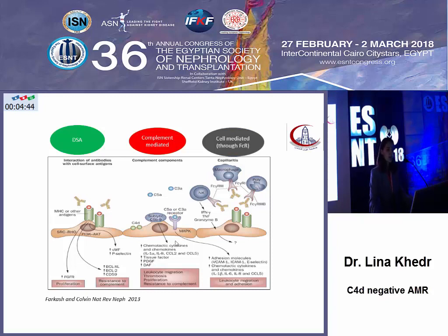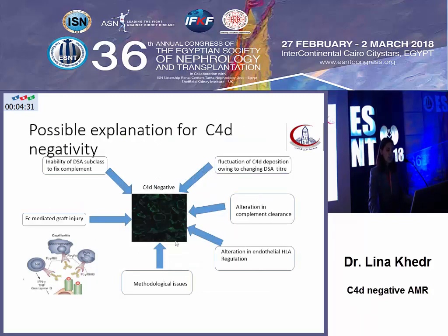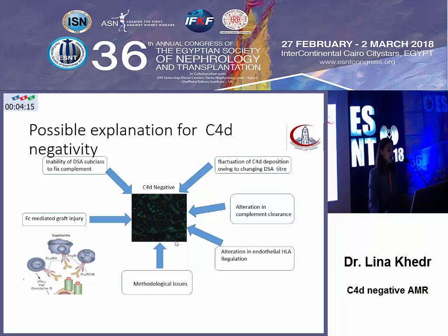How can this be? There is the Fc receptor of the donor-specific antibody, which can activate natural killer cells and lead to a complement-free cell-mediated injury, free from complement activation. The possible explanations for C4D-negativity include: the inability of certain donor-specific antibody subclasses to fix complement, Fc-mediated graft injury, methodological issues with C4D staining, fluctuation of C4D deposition according to donor-specific antibody levels, and alteration in endothelium HLA regulation and complement clearance.